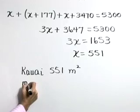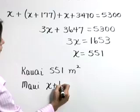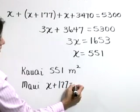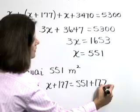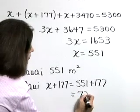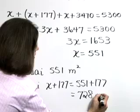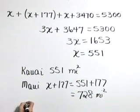The area of Maui is X plus 177. That's 551 plus 177, or 728 square miles.